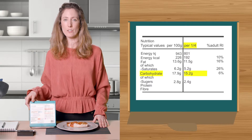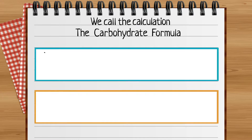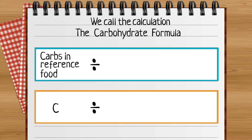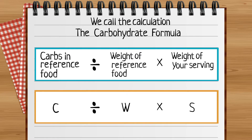Here's the calculation. C stands for carbohydrate in the reference food, W stands for weight of the reference food, and S stands for the weight of my own serving.